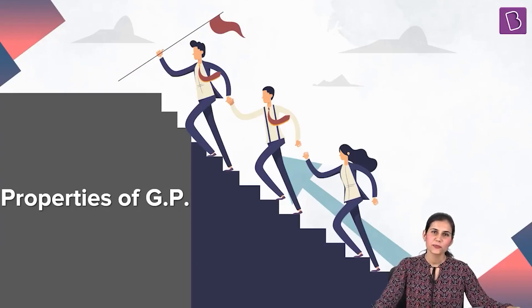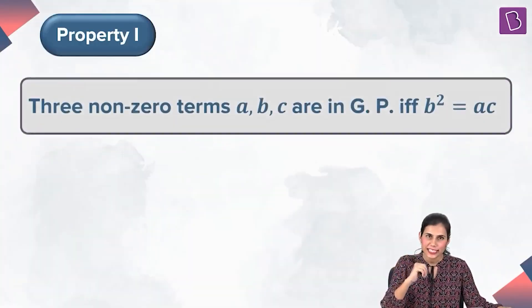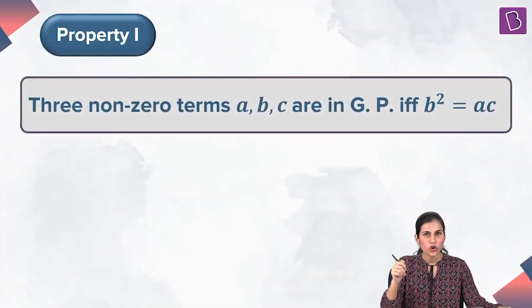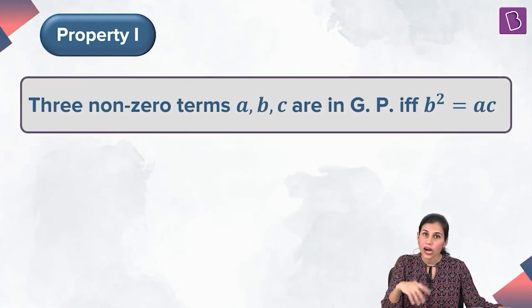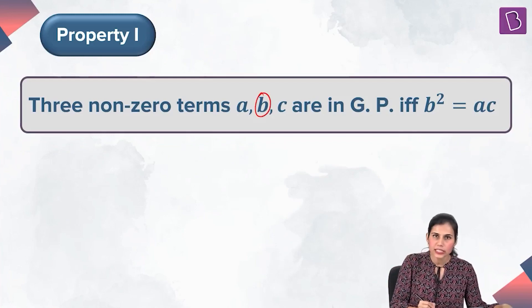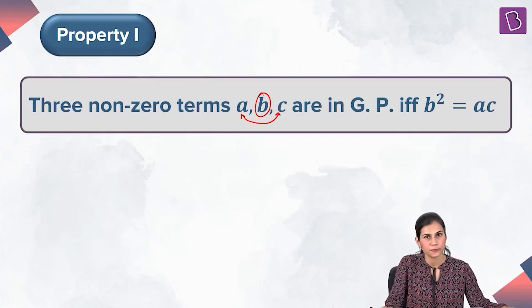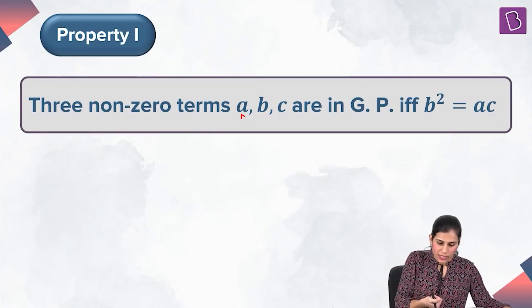Let's move on and explore the wonderful properties of a geometric progression. The very first property says that three non-zero terms A, B, C are in GP if and only if the square of the middle term is equal to the product of the first and the third term. The proof of this is extremely simple.